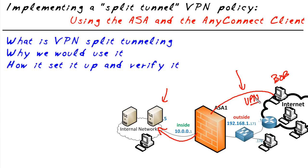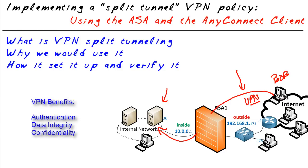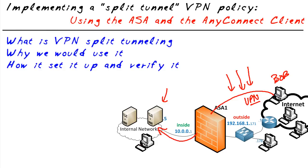Number one, we're only going to set up the tunnel for people we trust — we have authentication. We're going to make sure the data doesn't get manipulated in transit; that's data integrity. And due to encryption, we're going to make sure that data is protected, so anybody eavesdropping on the internet won't be able to make sense of the packets we're sending across. But still, we allow Bob to communicate with these internal resources.